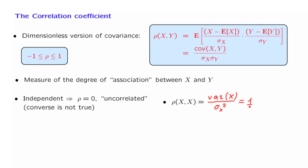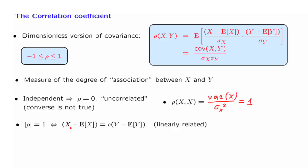A somewhat more general situation is the following. If we have two random variables that have a linear relation — that is, if I know y I can figure out the value of x with absolute certainty using a linear formula — then it turns out that the correlation coefficient is either plus 1 or minus 1. And the converse is true: if the correlation coefficient has absolute value of 1, then the two random variables obey a deterministic linear relation. So to conclude, an extreme value of plus or minus 1 is equivalent to having a deterministic linear relation between the two random variables.